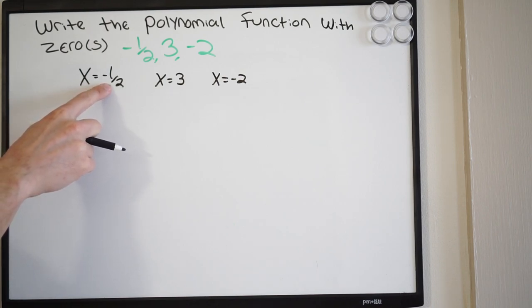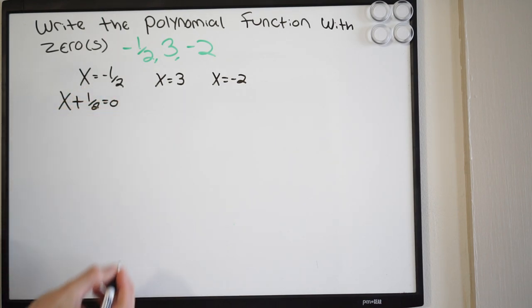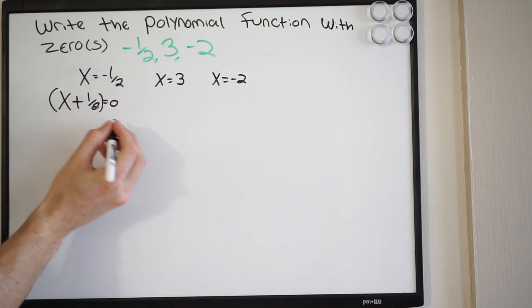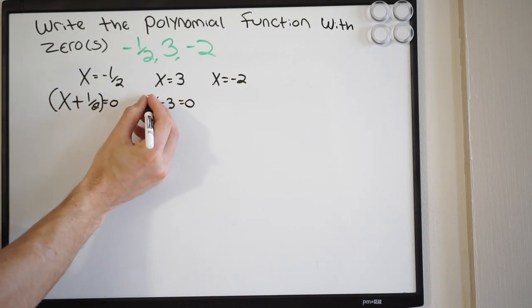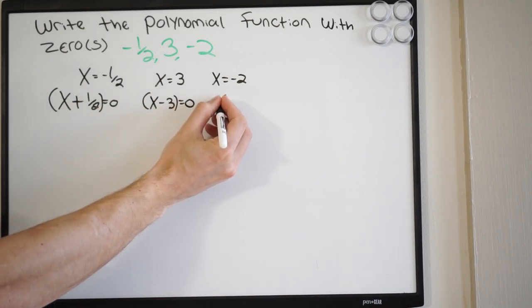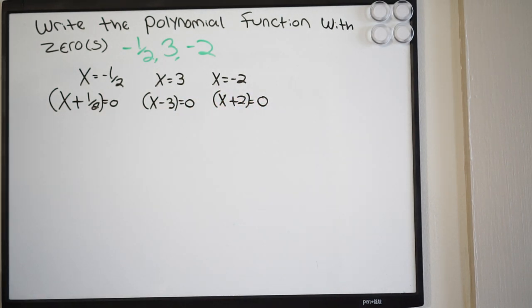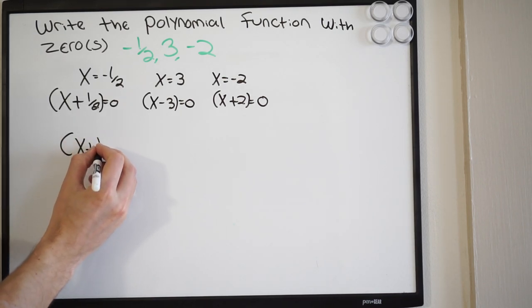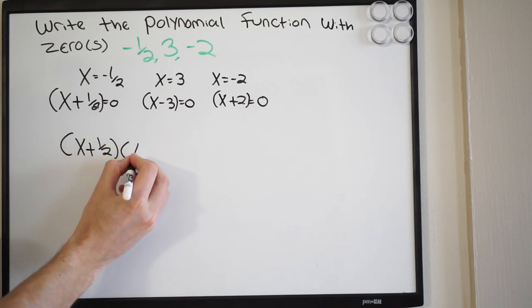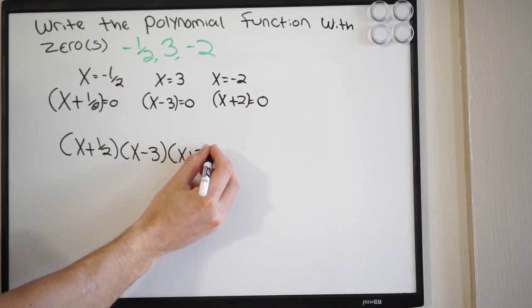So we have to put these back in factored form. We just simply move our coefficient over. So in this case, it's going to be x plus a half equal to zero. We'll have x minus three equal to zero, and this will be x plus two equal to zero. Now we simply just put these factors together: x plus a half, x minus three, and x plus two.